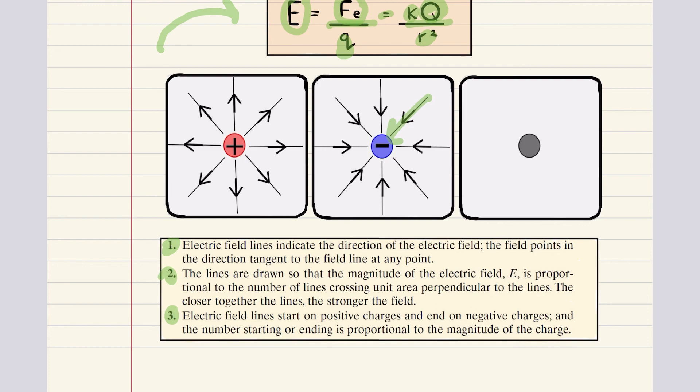I also want to make a side note that field lines never cross. Why not? Well, because the electric field cannot have two directions at the same point or exert more than one force on a test charge. In short, visualizing electric field lines help us understand how charges interact with each other over distance.